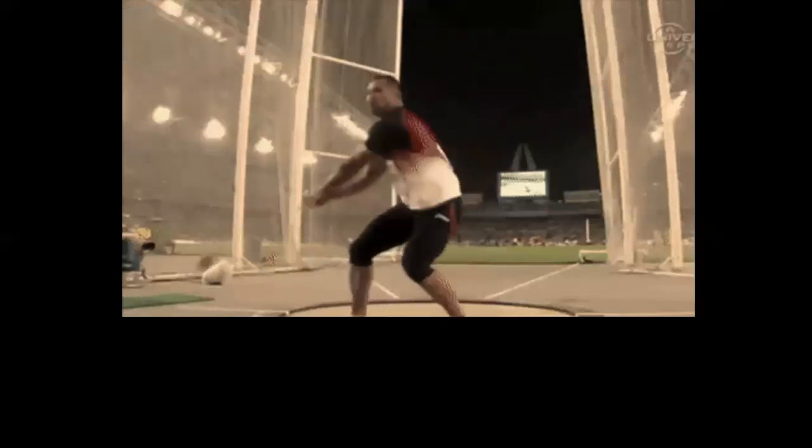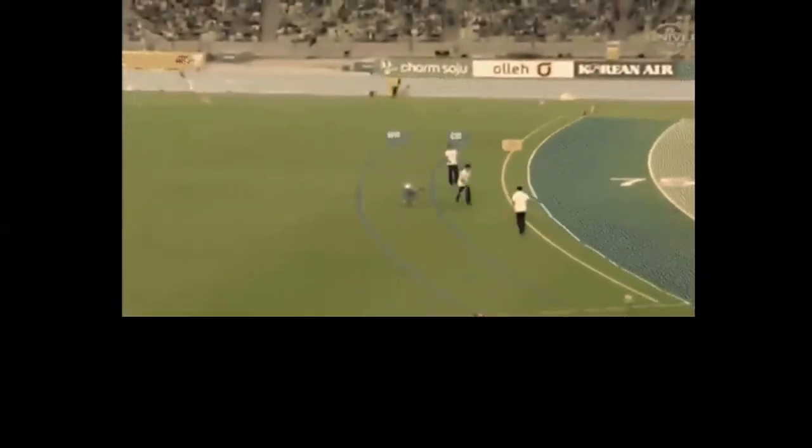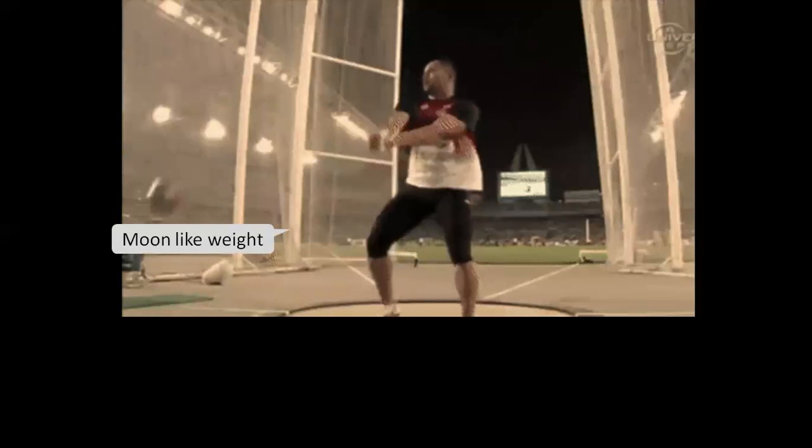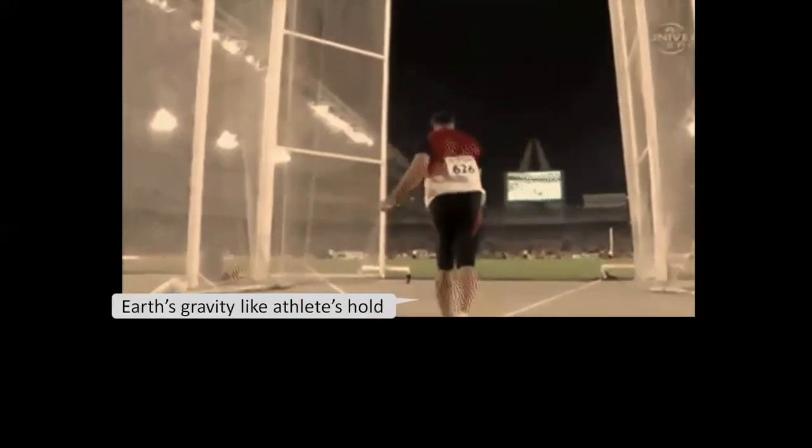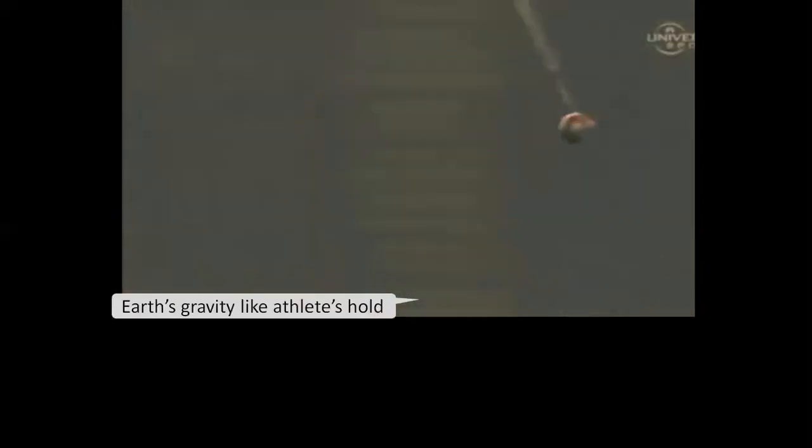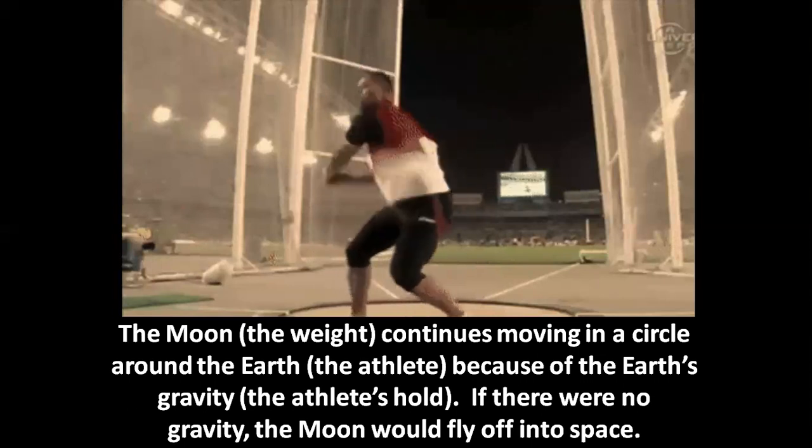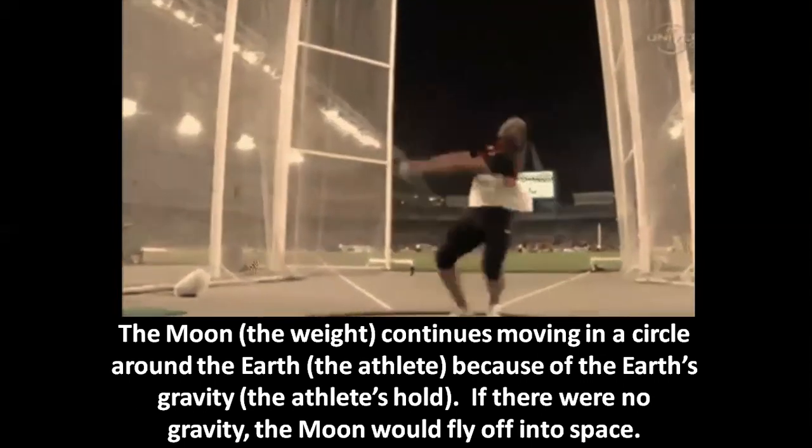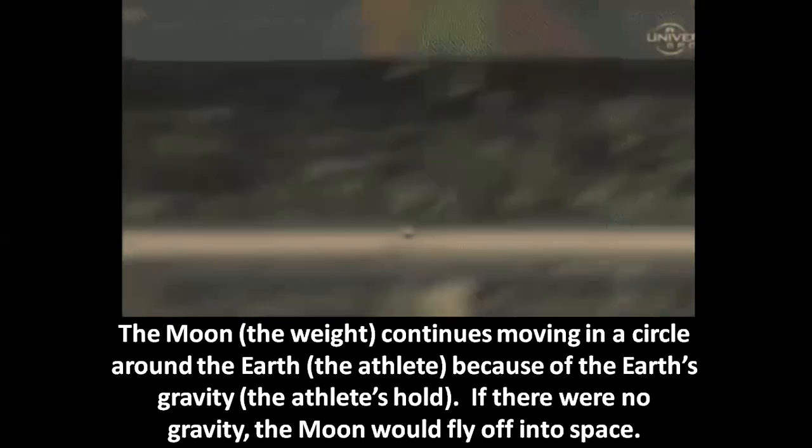This is the Olympic hammer throw event. Let's think of the moon like the weight, the earth like the athlete and earth's gravity like the athlete's hold. The moon, the weight, continues moving in a circle around the earth, the athlete, because of the earth's gravity, the athlete's hold. If there were no gravity, the moon would fly off into space.